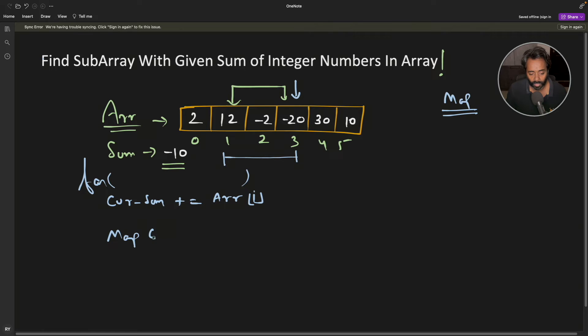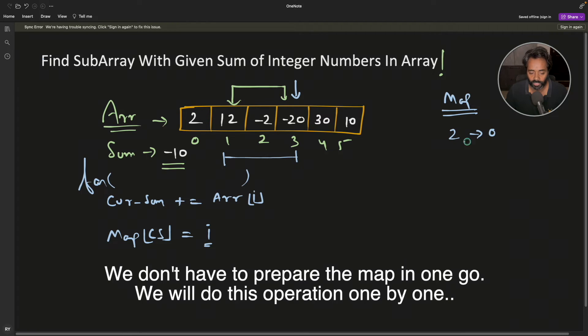You have a map here, right? Map of current_sum equal to i. This is going to be the index. What we are going to store in the map is first 2 and then index 0, then 2 plus 12 meaning 14 and index 1.